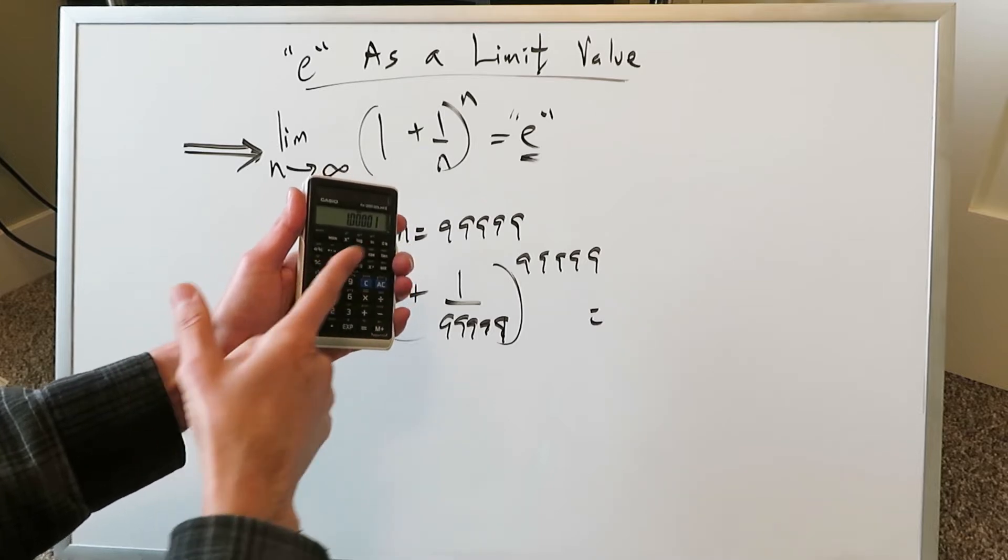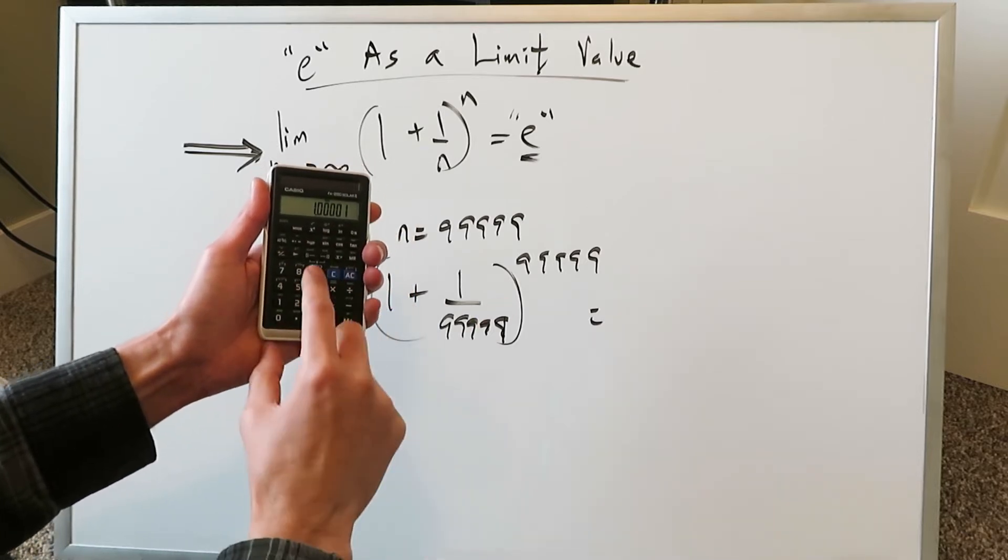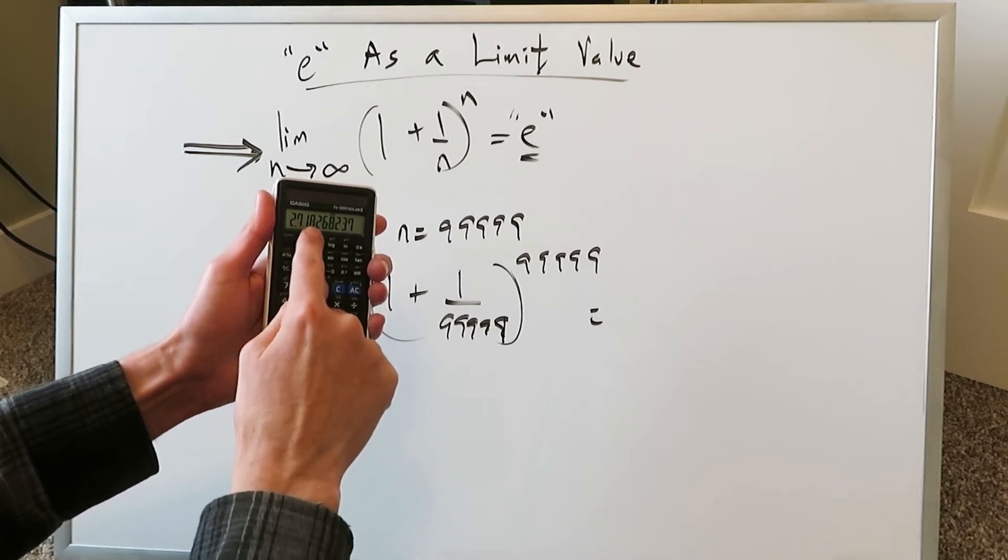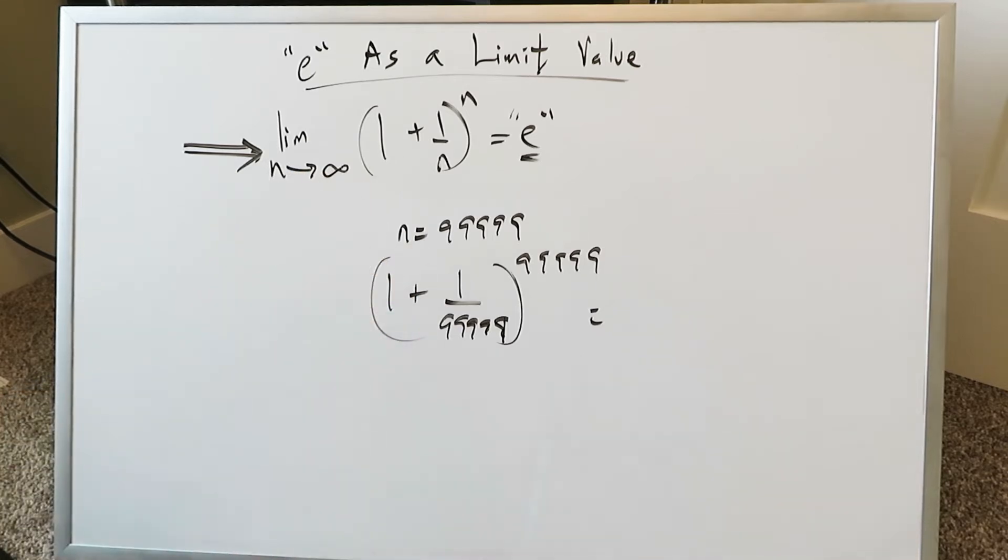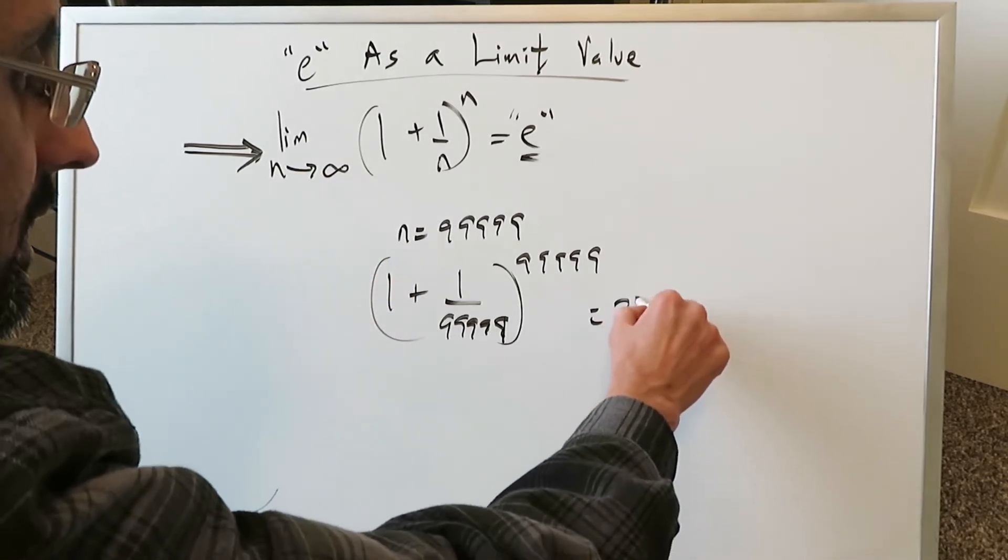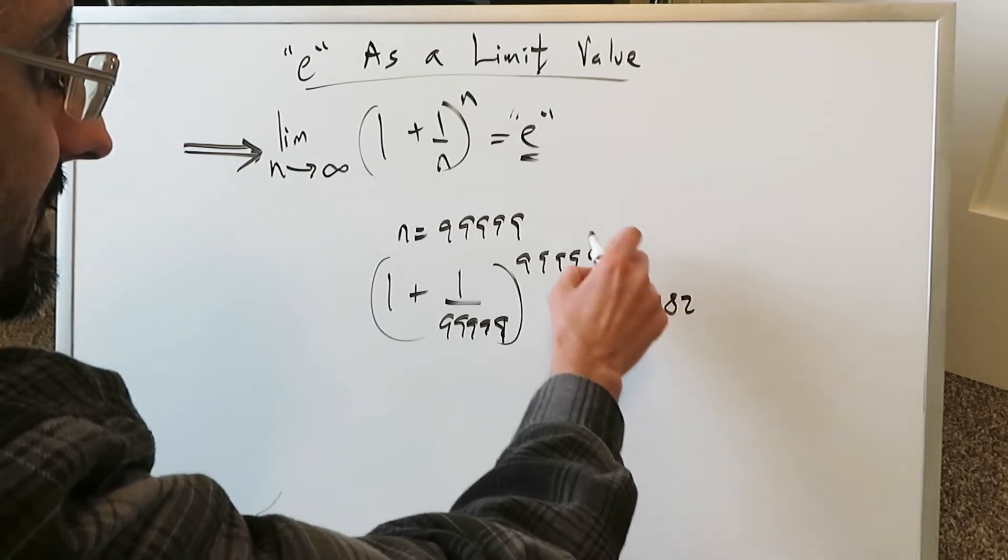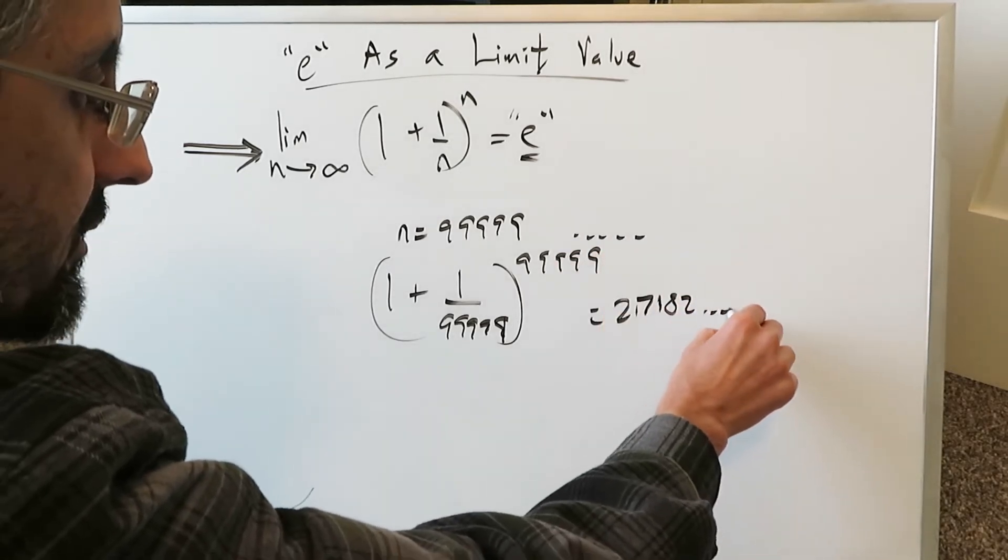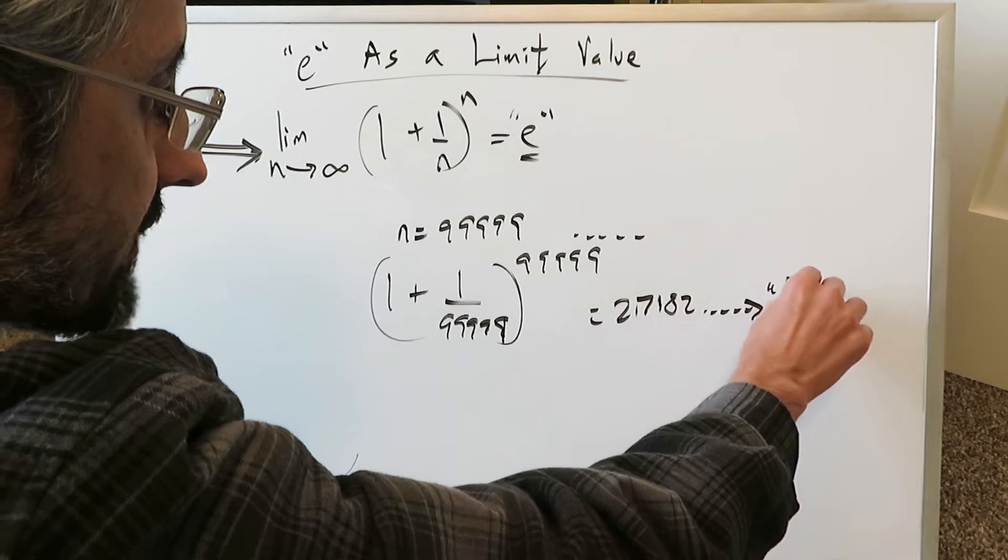We'll add that to 1. We will do exponent of 99,999. We'll get here 2.7182. But as you can see, as you add more nines, as you add more of these numbers, this value here will become closer and closer to the true value of E.